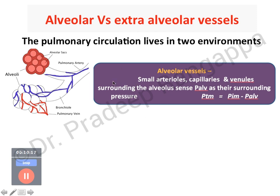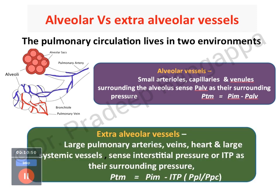Due to increased volume, alveolar vessels get constricted and collapsed, increasing pulmonary vascular resistance. At the extra-alveolar level, it affects large pulmonary arteries, veins, heart, and lungs. Here transmural pressure equals intramural pressure minus intrathoracic pressure. At the alveolar level, alveolar pressure contributes to PVR; at the macro level of large vessels, intrathoracic pressure bears on PVR. So both micro-level alveolar pathology and overall intrathoracic pressure increases drive higher pulmonary vascular resistance in disease.